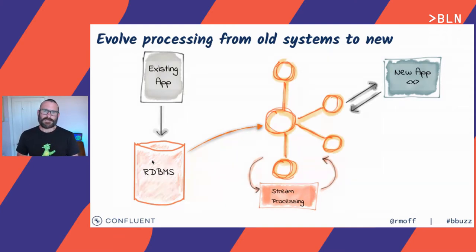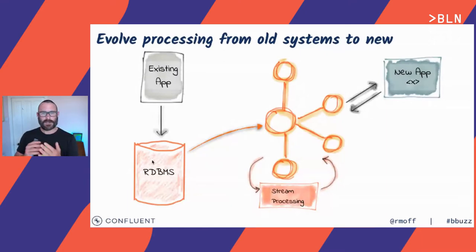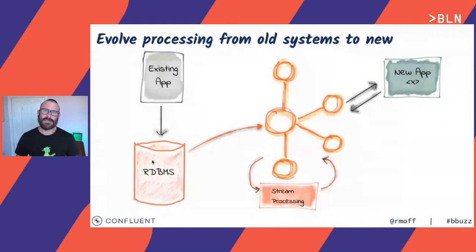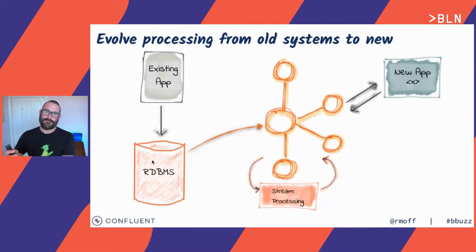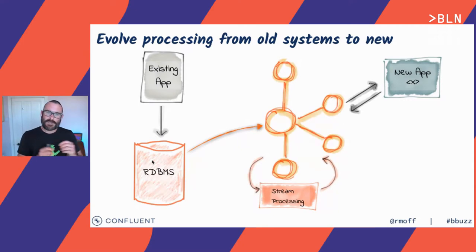The idea of getting data out of a database into an event streaming platform like Kafka may sound a little like squares and circles — do these things actually match up? Because Kafka is about data in motion, streams and events, and databases are about data at rest, static lumps of data. But there's actually a very tight relationship between the two.